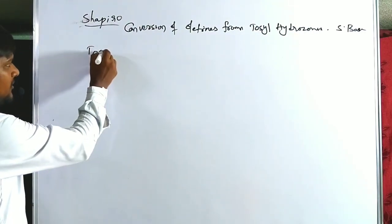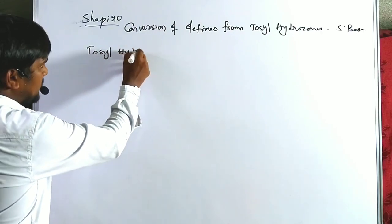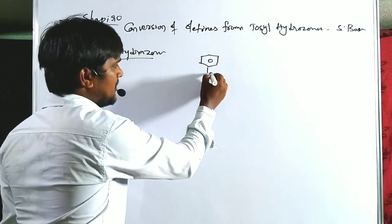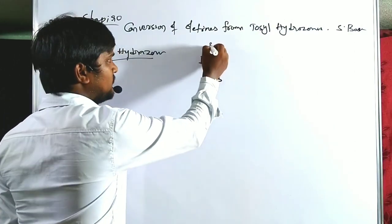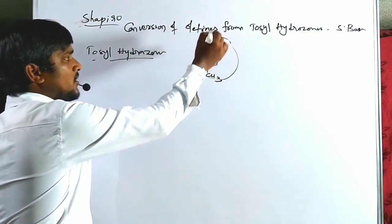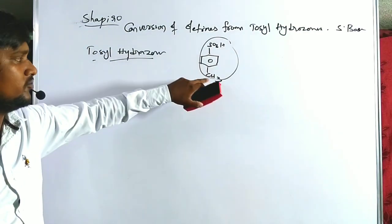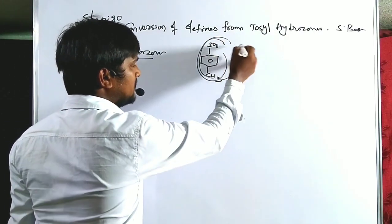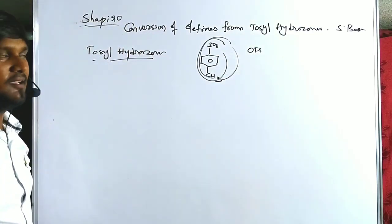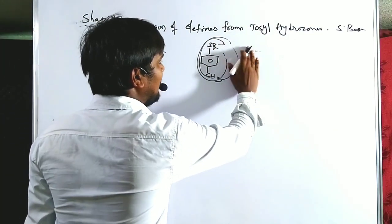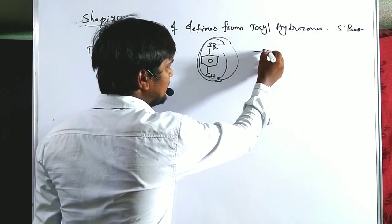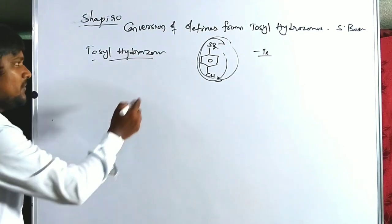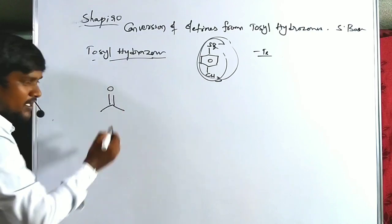The term tosyl hydrazone involves the tosyl group. Generally, tosylation means the tosyl group, which is nothing but para-methyl, that means para-toluene sulfonic acid — also called OTs or tosyloxy. Without one oxygen, it is denoted as Ts (tosyl). The tosyl group comes from paratolyl sulfonic acid.